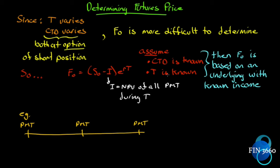We also assume T is known. On short periods of time that's a bit of a problem, but on longer periods of time the difference between delivering on day one or day five is not a big deal over five years. Over six months, however, a difference of five days might be significant. Both of these assumptions are not fully solid assumptions, but most people can live with them.